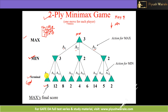We go to a particular depth and then backtrack. The move before the terminal state is by Min player, so Min will choose the action that gives the minimum score. Out of a11, a12, a13 with values 3, 12, and 8, the minimum is 3 via a11. So the value of the Min node at this point is 3.